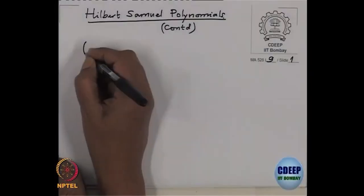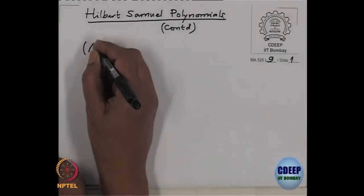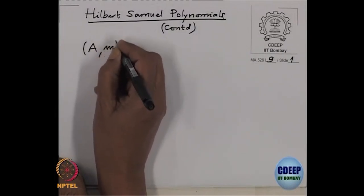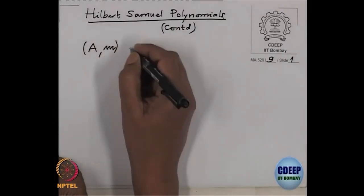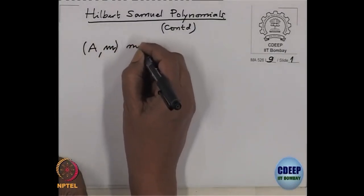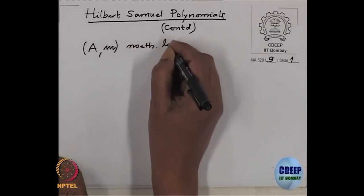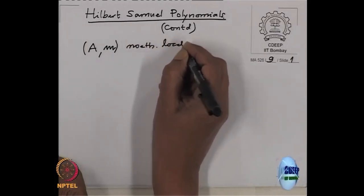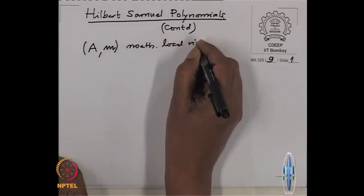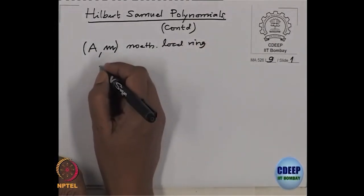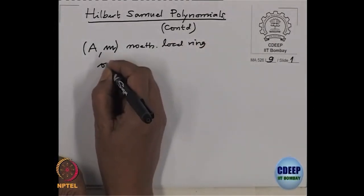Let me recall a few things. We have a Noetherian local ring, and Q is an M-primary ideal.